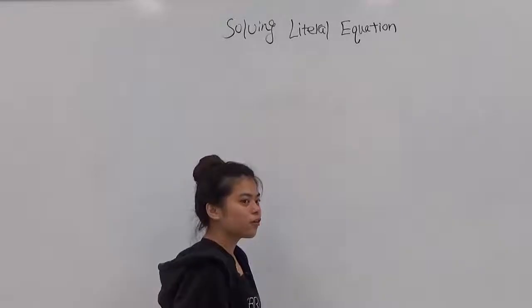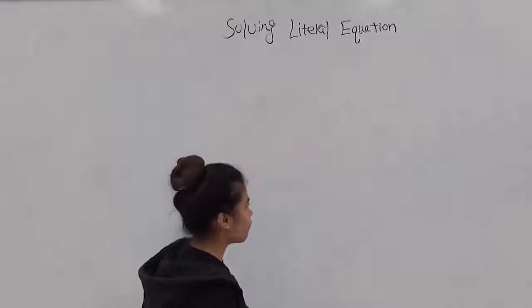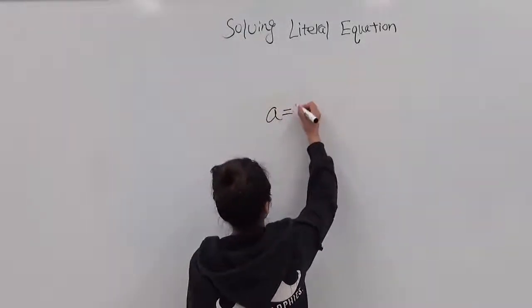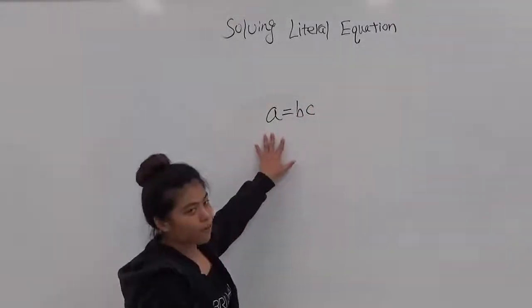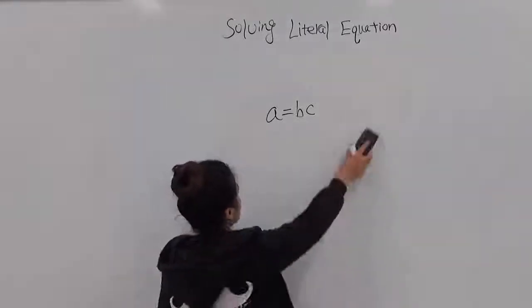So what is a literal equation? A literal equation simply just means that there are two or more variables in an equation. For example, a equals bc. There is more than one variable in this equation. So this is an example of a literal equation.